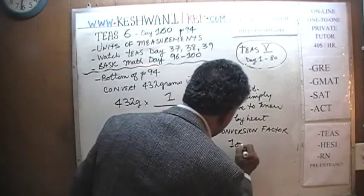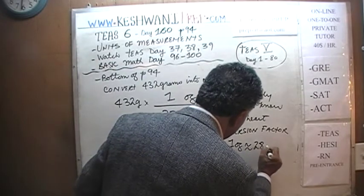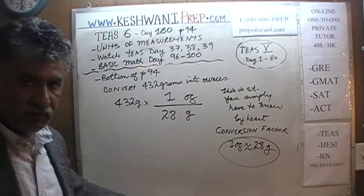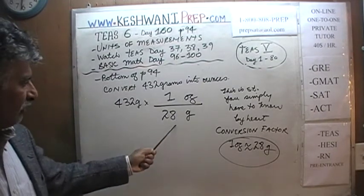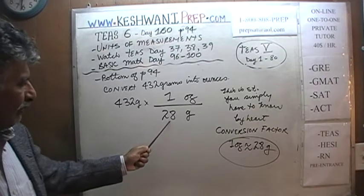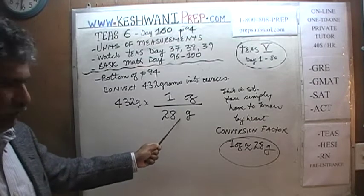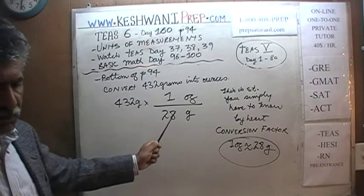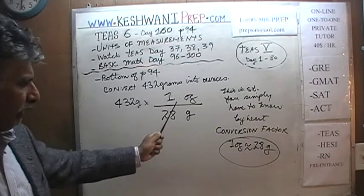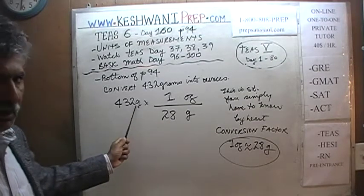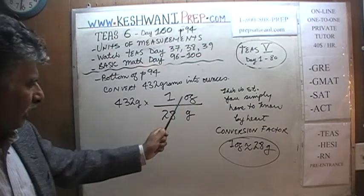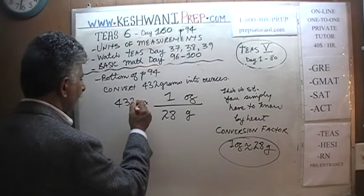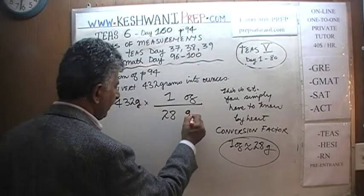You simply have to memorize that one ounce is made up of approximately 28 grams — otherwise we cannot do this problem. This is your conversion factor: one ounce equals 28 grams. The top quantity and the bottom quantity are equal to each other, so this fraction equals one. We're doing this so that we can convert our unit from grams to ounces. We now have grams on the top and grams on the bottom.